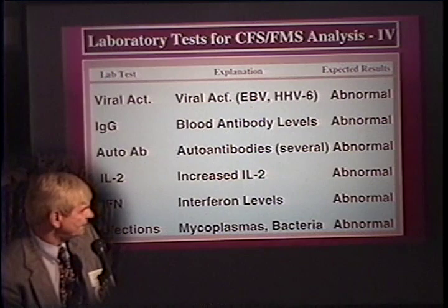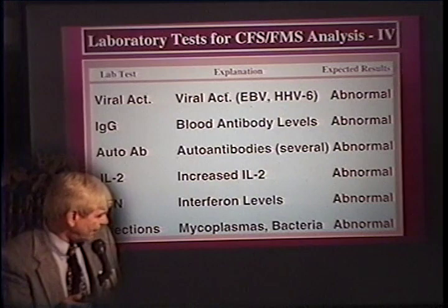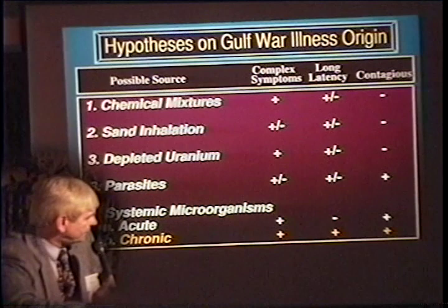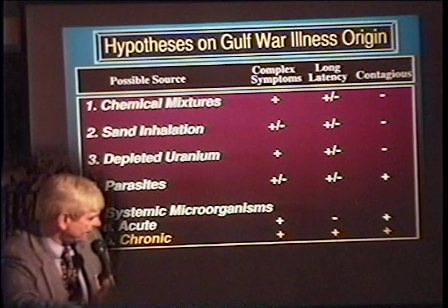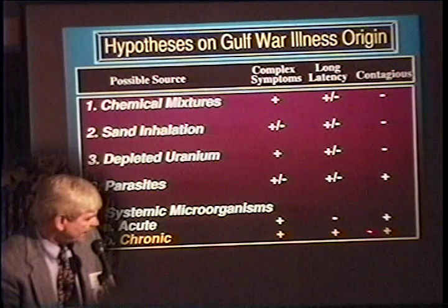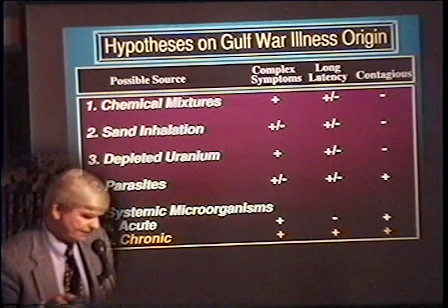Some of these immune system abnormalities can be seen in the cytokine profiles — changes in interleukin-2, interferon, and IL-12. Going back to the Gulf War, there were several proposals as to why these people got sick: mixtures of chemicals, sand inhalation, depleted uranium, parasites, or systemic infections. The one category that really fits is systemic infections — because in some of these patients they're contagious and spread the illness to family members. So you'd expect to find a transmittable element, and that's got to be something infectious.